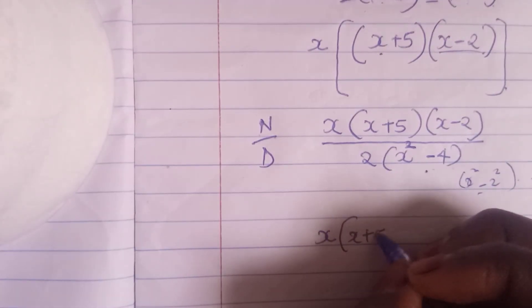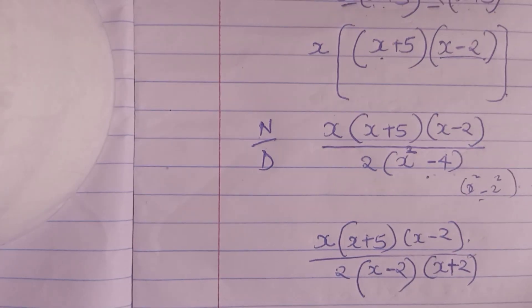So I'm going to write x. This is our numerator, x plus 5 into x minus 2, divided by 2 into x, x minus 2 into x plus 2. The difference of 2 squares, right?